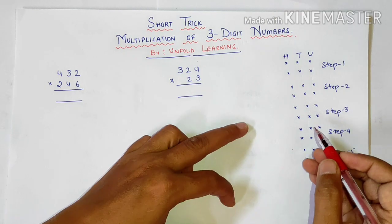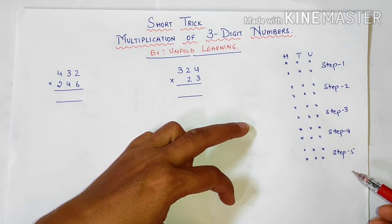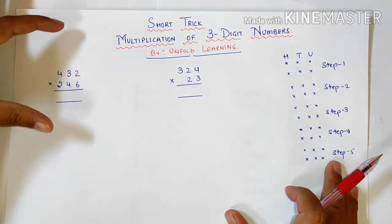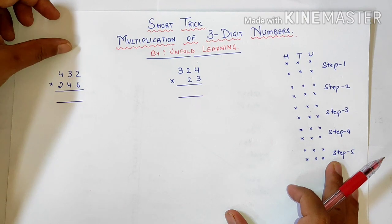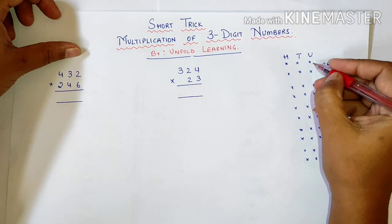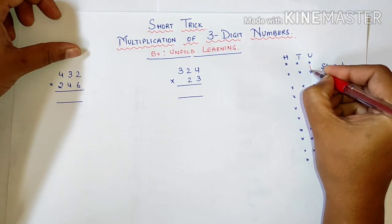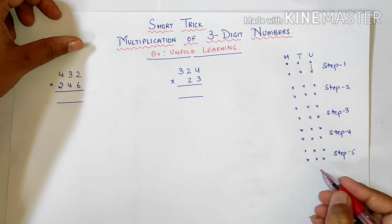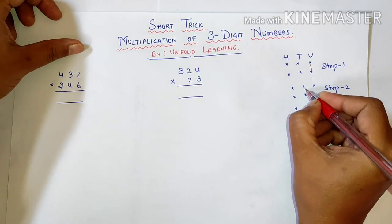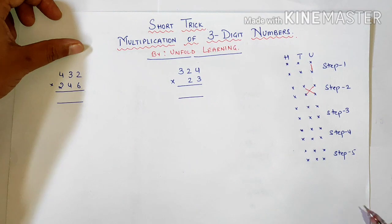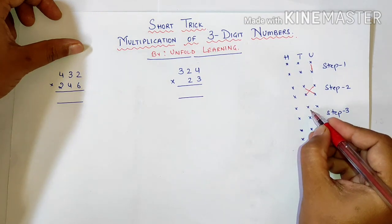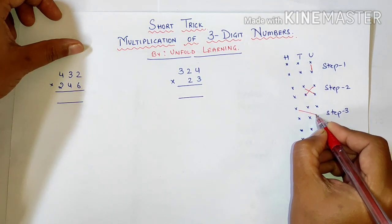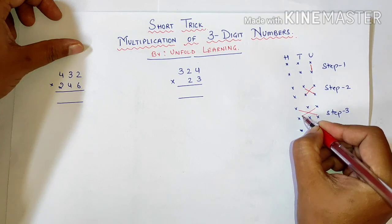I have made some dots here. So through particular steps we will learn 3-digit multiplication. First of all we will follow the step that is the multiplication of units place. In the second step we will multiply the tens and units place. In the third step we will multiply the units and units place.